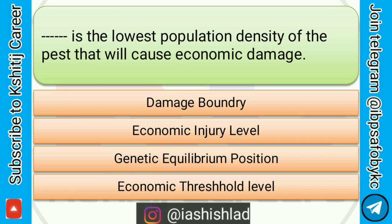First question is: dash dash is the lowest population density of the pests that will cause economic damage. Options are: damage boundary, economic injury level, genetic equilibrium position, economic threshold level. Correct answer is economic injury level.